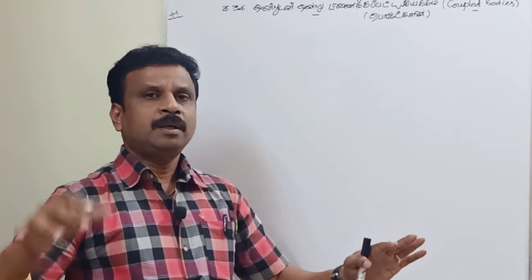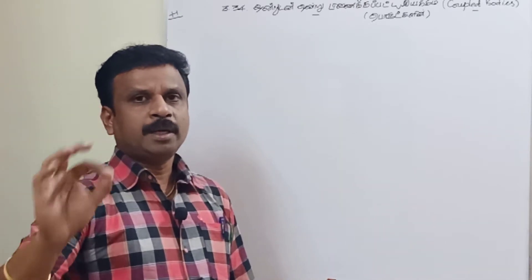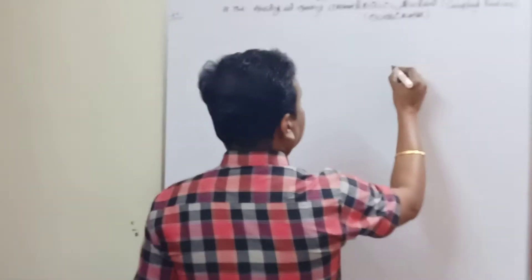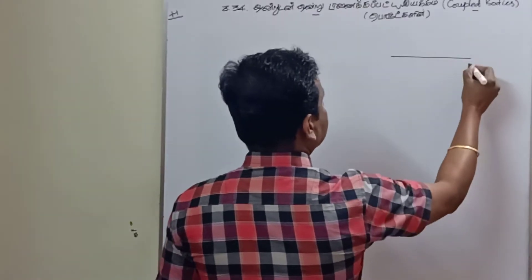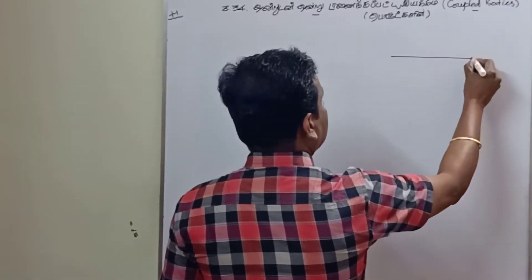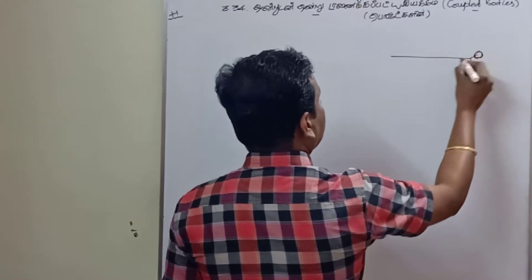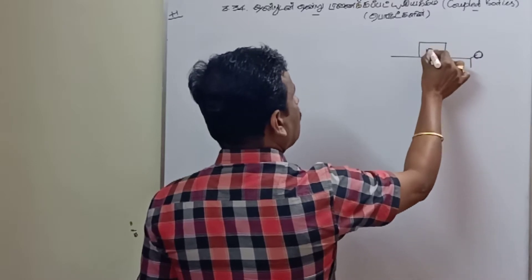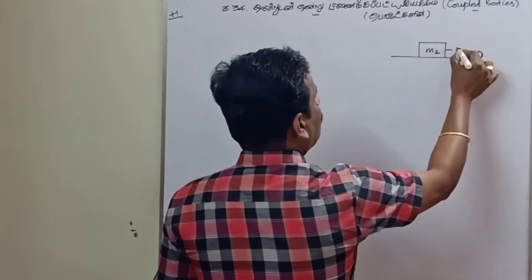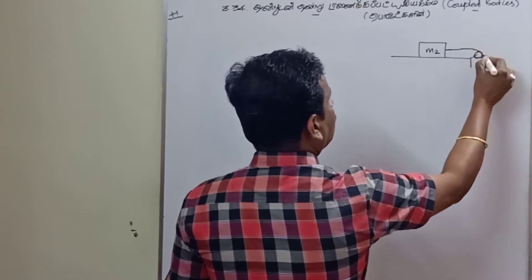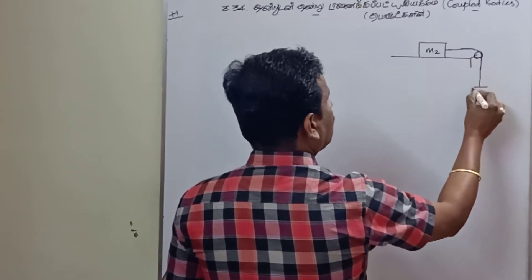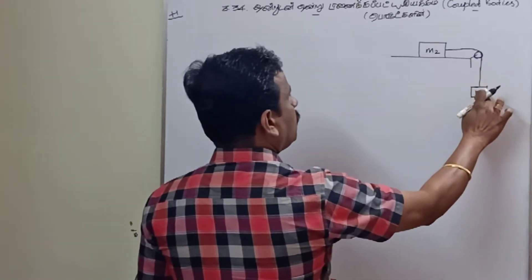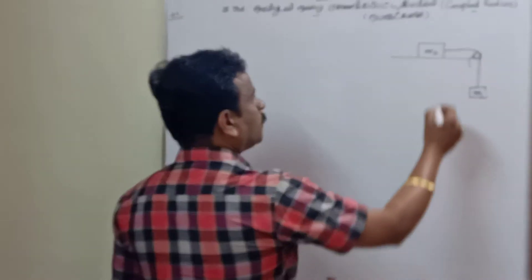The problem procedure and everything is the same — we need to find the common acceleration and tension along the rope. Now we have a table with a pulley at the edge. Mass m1 is hanging off the edge and mass m2 is the block sitting on the table. The two blocks m1 and m2 are connected by means of an inextensible rope.